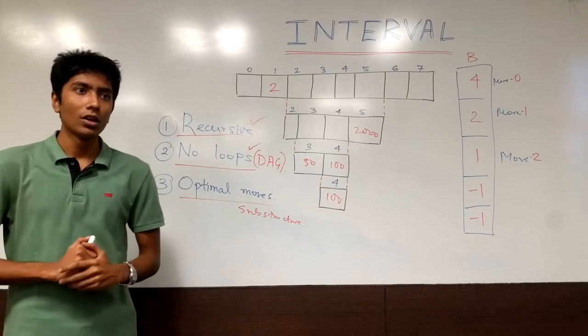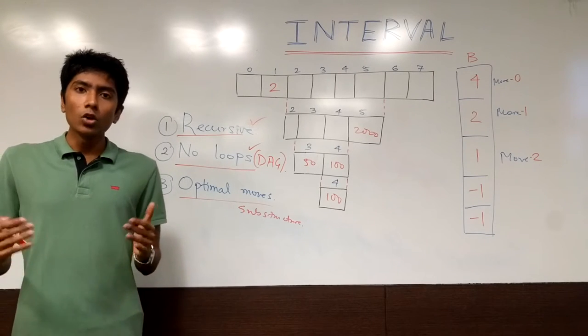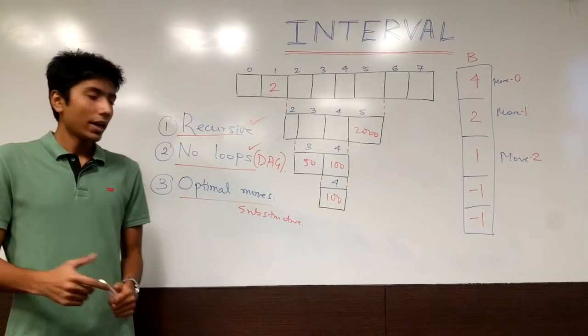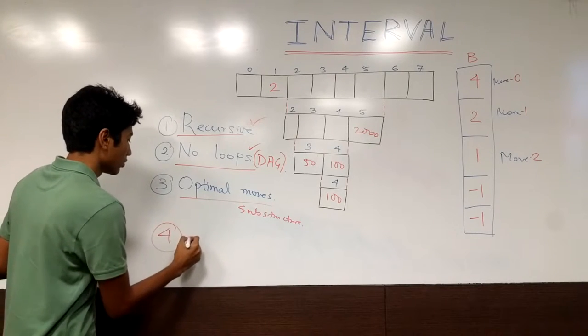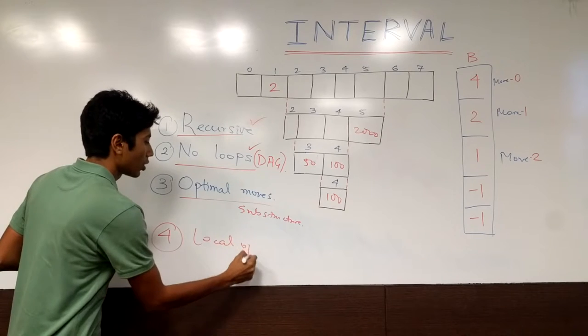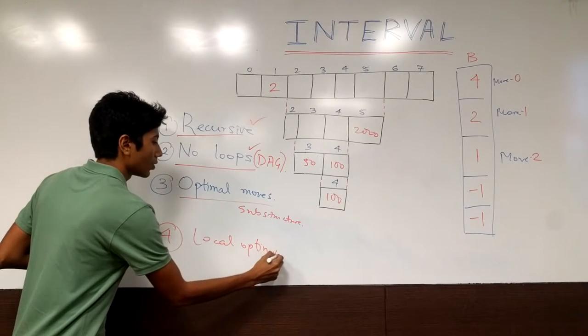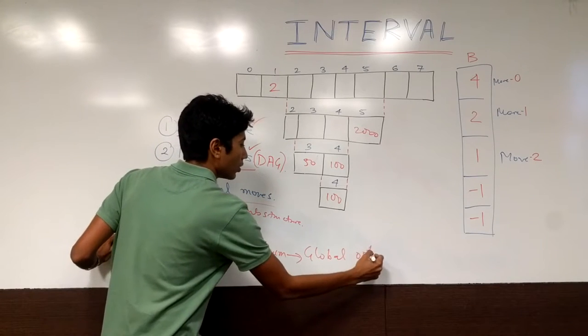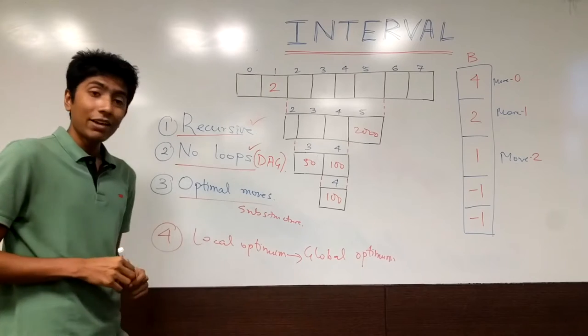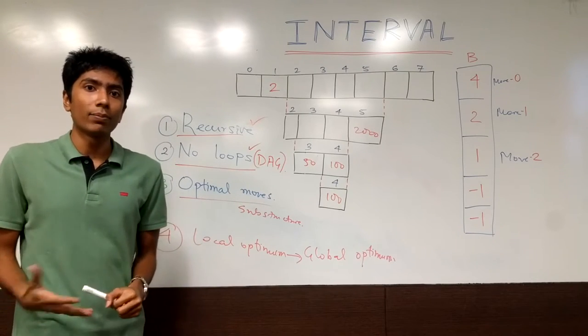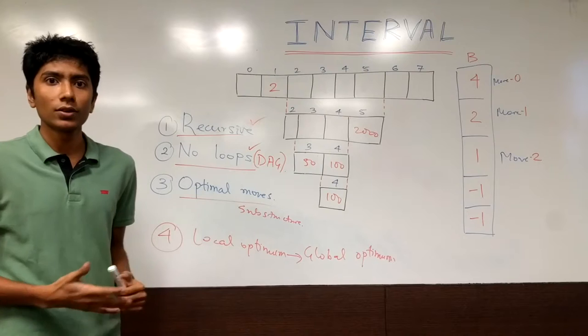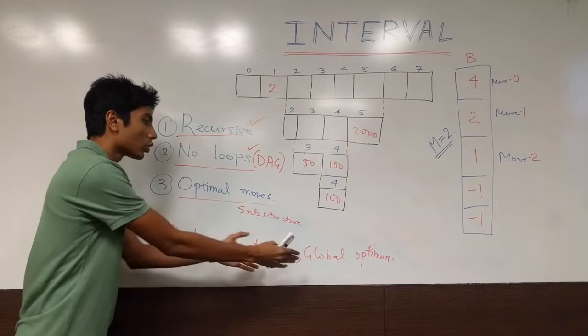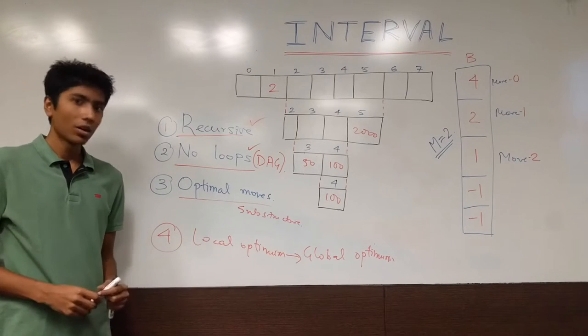In fact, we can take this one step further. However, if you are choosing local optimum, is that also equal to global optimum? So if the fourth case holds, which is local optimum leads to global optimum, if this holds, then you can actually use a greedy approach, not just a DP approach. So take some time, if you want, you can pause the video to understand why local to global optimum is not working.